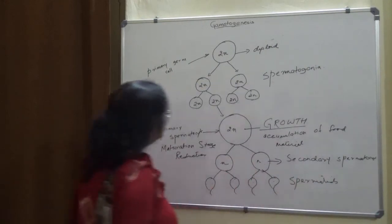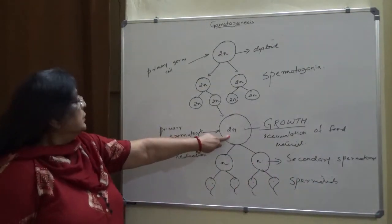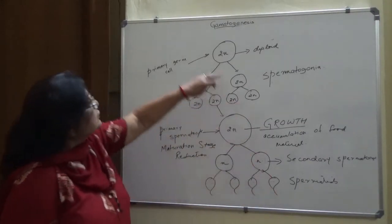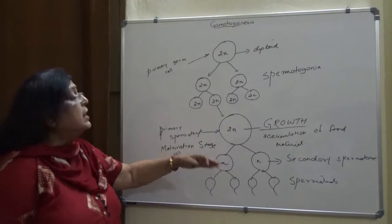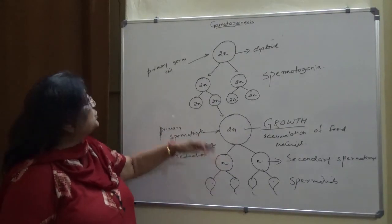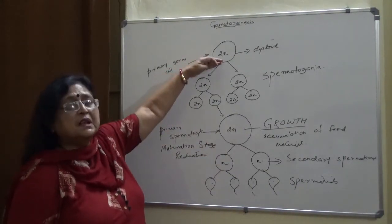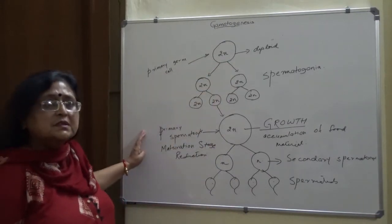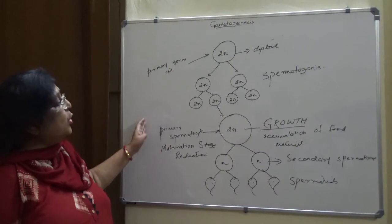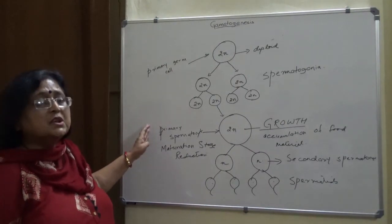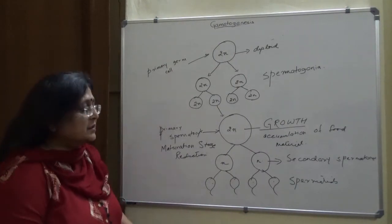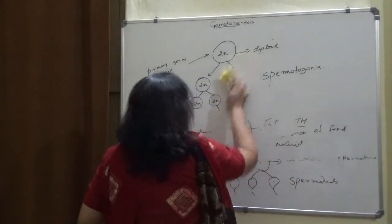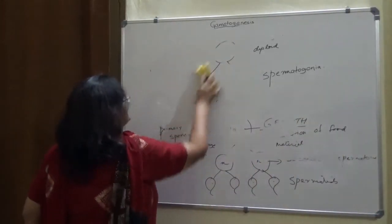From one primary spermatocyte we get four spermatids, so at the end we will have four spermatids when we take one primary germ cell into consideration. The first stage is now complete, and we will enter the second stage, that is spermiogenesis, where the spermatid will mature into a sperm.